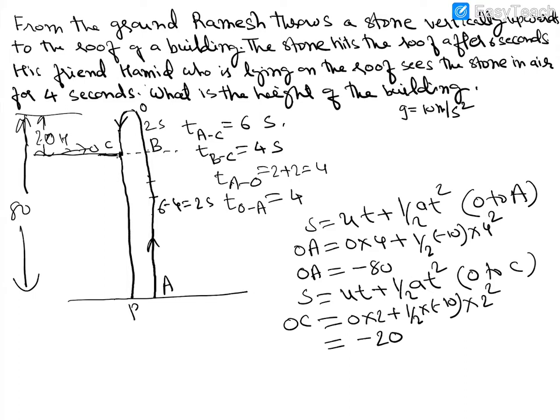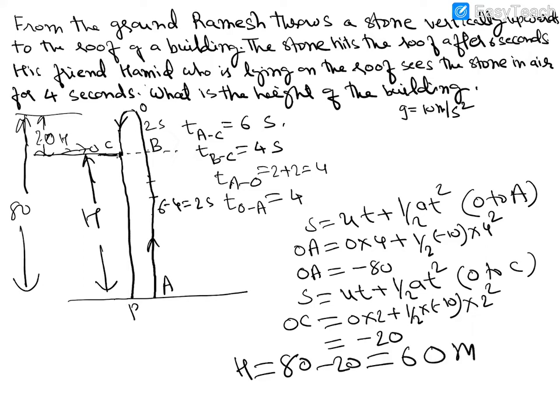So the height of the building, which is CP, equals OA minus OC, that is 80 minus 20 equals 60 meters. H is equal to 60 meters. This is the answer. Thank you.